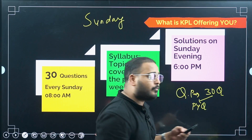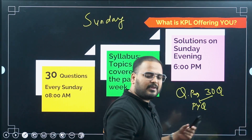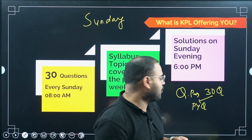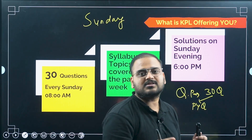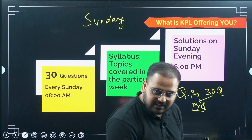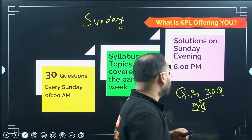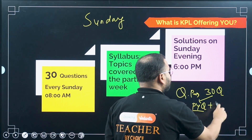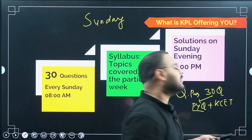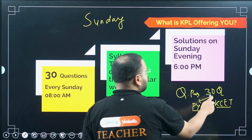We will do PYQs first. If a chapter does not have 30 PYQs — because a lot of portions are deleted — and if we consider only the relevant portion and it doesn't reach 30 PYQs, then we are going to take up some K-set ready problems, meaning questions which can be expected to come in K-set. Those kinds of questions will also be taken. Again, this will be based upon 30 questions.